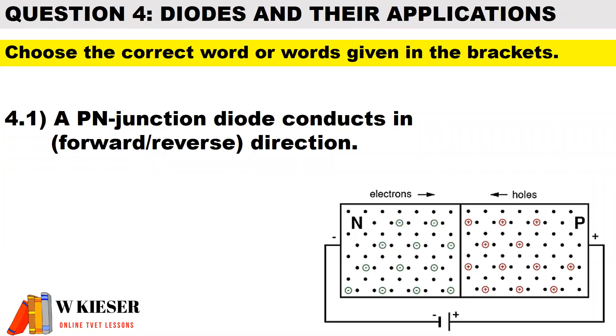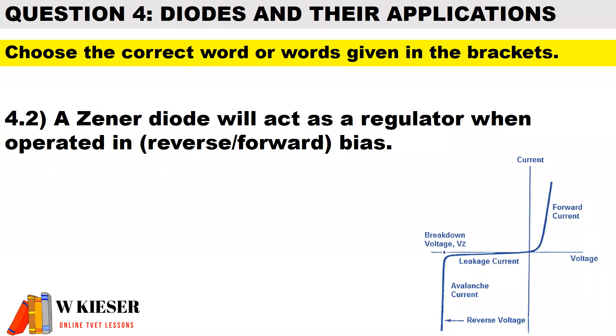Now question 4.1, a PN junction diode conducts in forward direction. In question 4.2, a Zener diode will act as a regulator when operated in reverse bias.